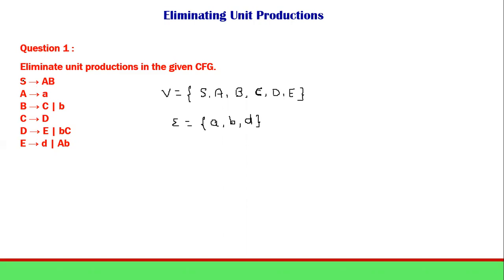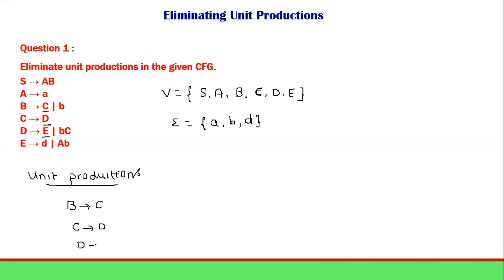Looking at the productions: S → A, B has two variables so it is not a unit production. S → a is a single input symbol, not a variable, so also not a unit production. B → C — this has a single variable, so this is one we will have to eliminate. Similarly, C → B is a unit production, D → capital B is a unit production, and E → D is also a single variable unit production.